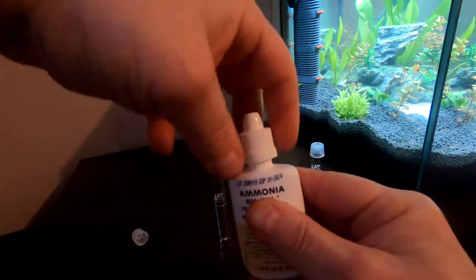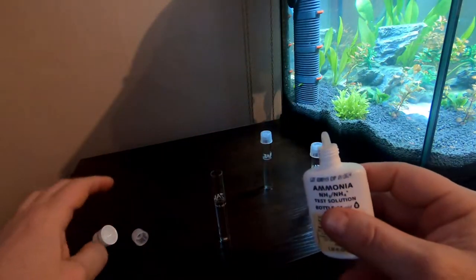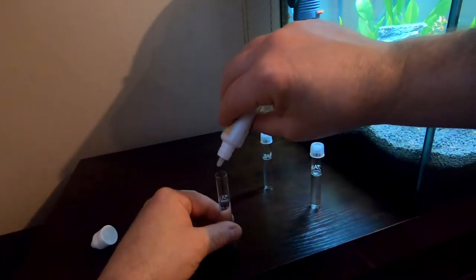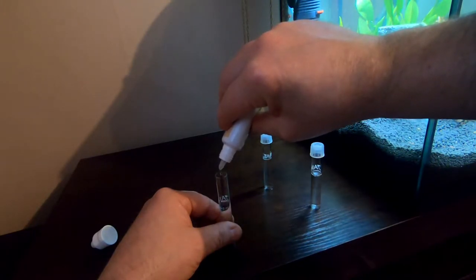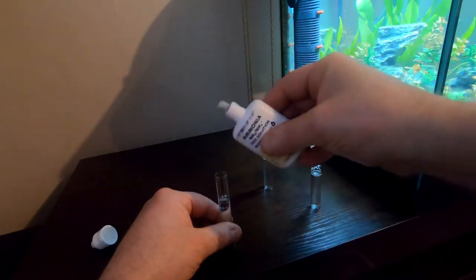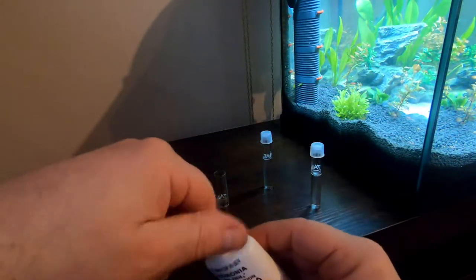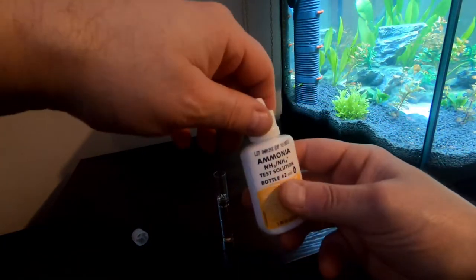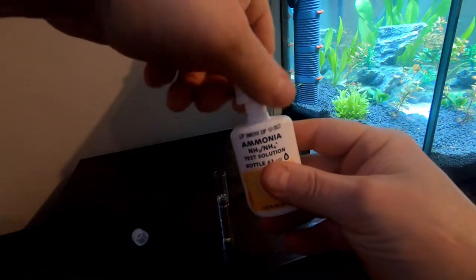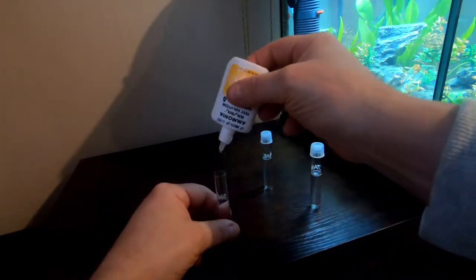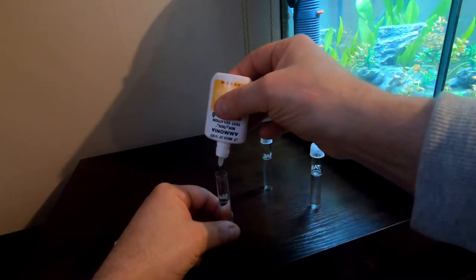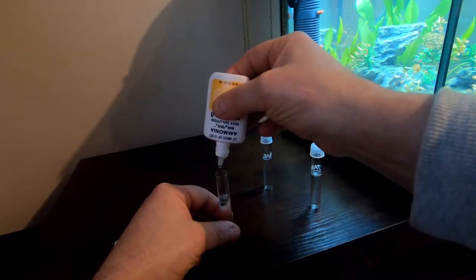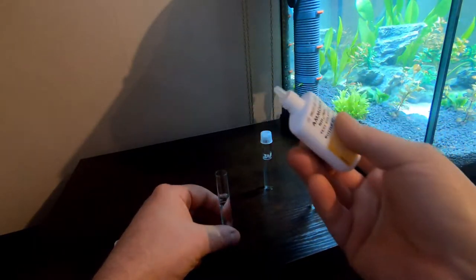We're going to put eight drops in here, so that's one, two, three, four, five, six, seven, eight. Put that one to one side. The same with the other one. I'm going to put eight with this. Now these normally are timed to test. One, two, three, four, five, six, seven, eight.